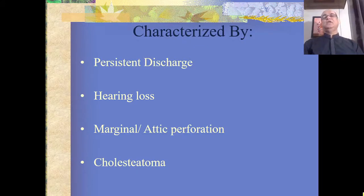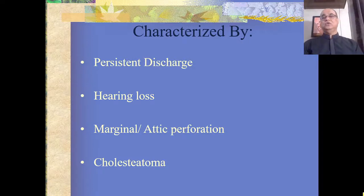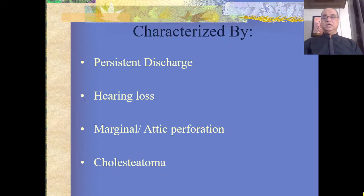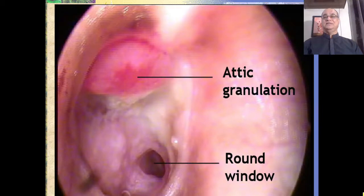In the Atticoantral type, the perforation is either marginal — the posterosuperior part of the pars tensa is usually involved — or there can be a perforation in the pars flaccida, also called attic perforation. Cholesteatoma is the hallmark of this Atticoantral type of disease. This is how attic granulations may appear on otoscopic examination.